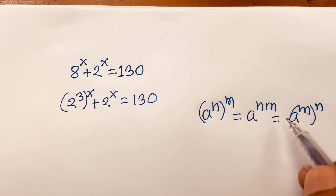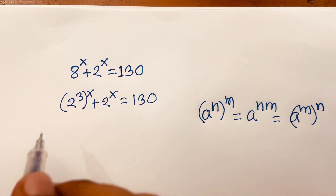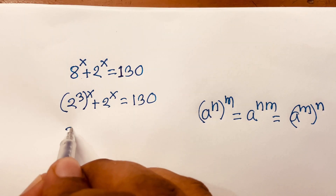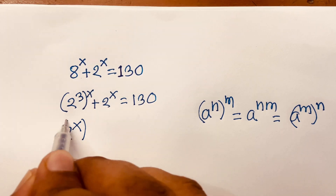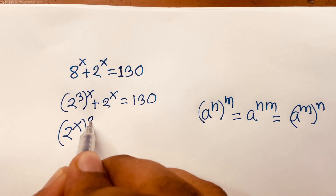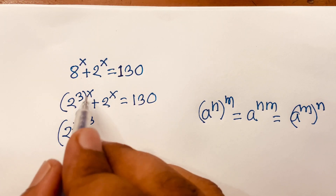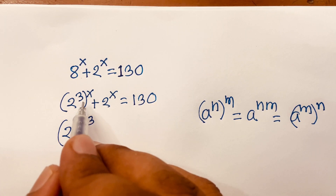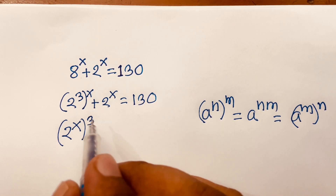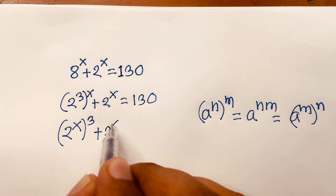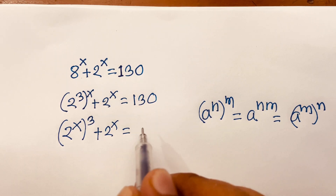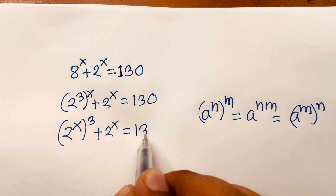If I follow these rules, I can write here (2 to the power x) to the power 3 — I just move the exponent inside the bracket — plus 2 to the power x is equal to 130.